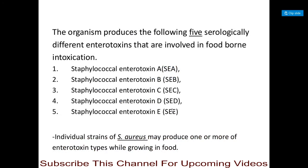The organism produces five serologically different enterotoxins involved in foodborne intoxication. These five types include Staphylococcal Enterotoxin A (SEA), SEB, SEC, SED, and SEE. Individual strains of Staphylococcus aureus can produce one or more of these enterotoxin types when growing in food.